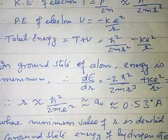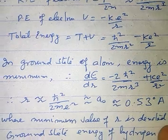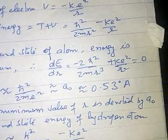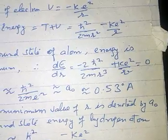Upon solving this equation, we will get r is equal to a0, which is equal to 0.53 angstrom, where minimum value of r is denoted by a0.